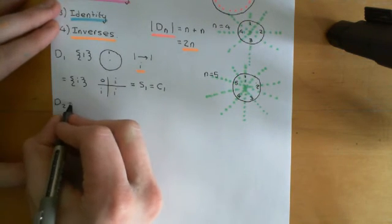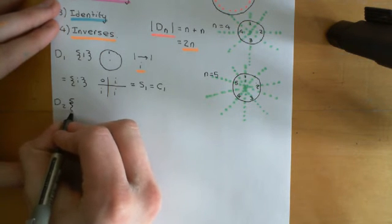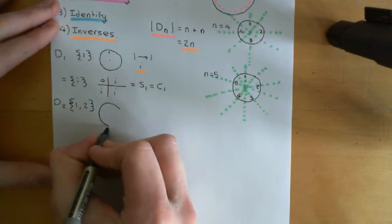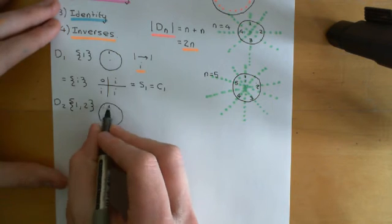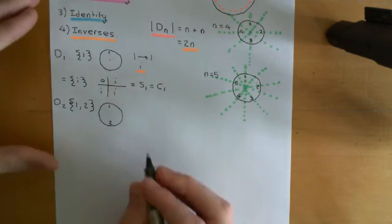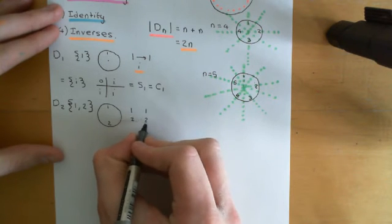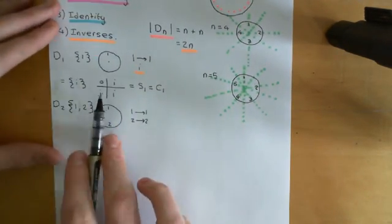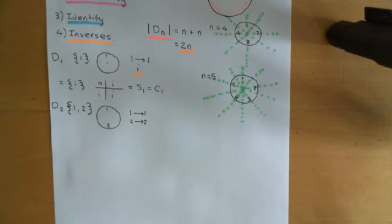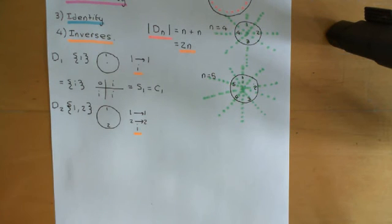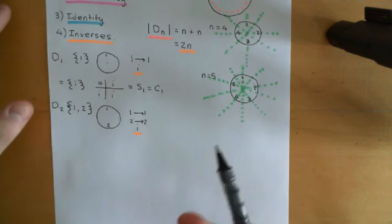D2 isn't going to be particularly interesting either — I'm just doing these to set the scene before D3 and D4. For D2, we'll think in terms of set permutations of a set of two things. We'll take our disk and put our two numbers on opposite sides. We still have the identity map — the real-world manoeuvre where you do nothing — and we'll denote that as I.